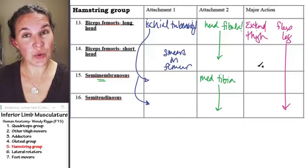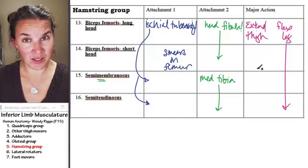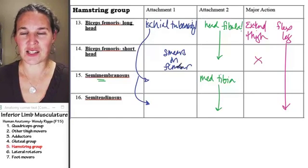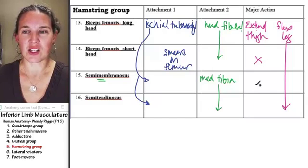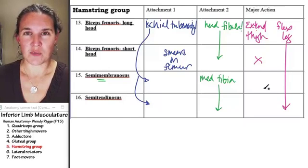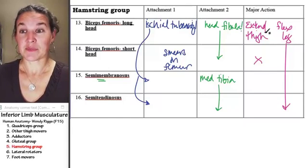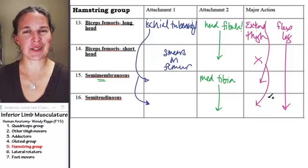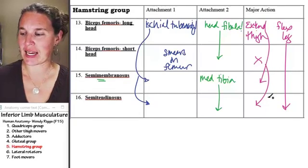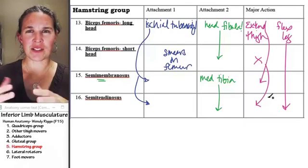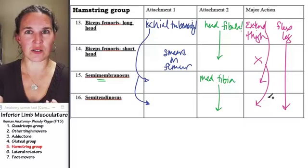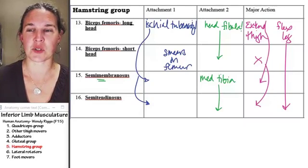Do you think the short head of bicep femoris is going to extend the thigh? No, doggies, it doesn't even cross the hip joint, so it can't, but semimembranosus, semitendinosus, you know they're extending the thigh. You know that thing where you have to lie on your belly, and you do leg curls, thigh curls? That's working your hamstrings group.